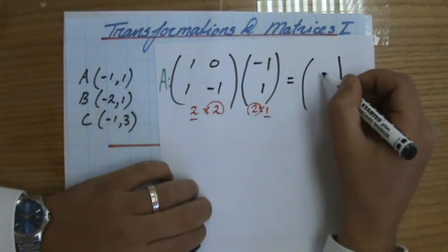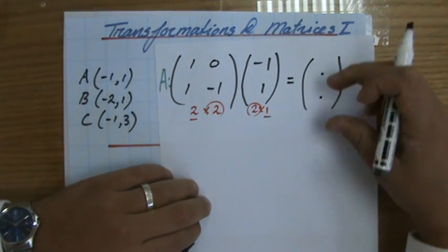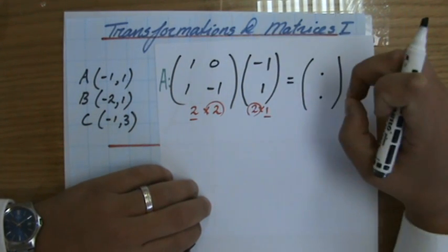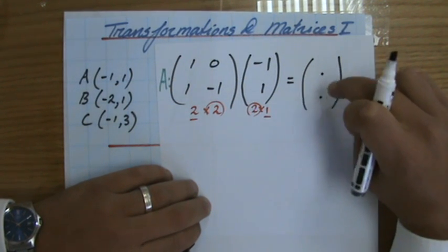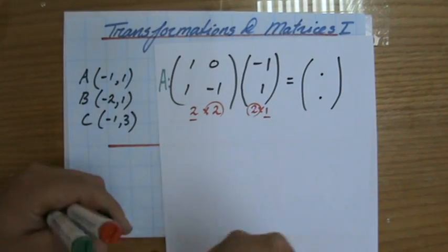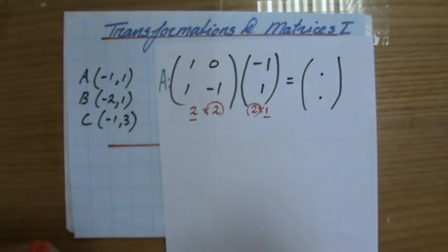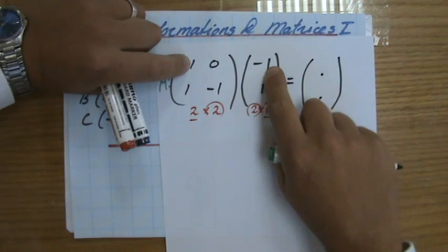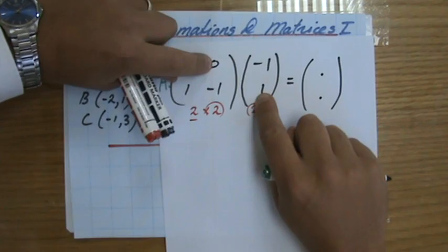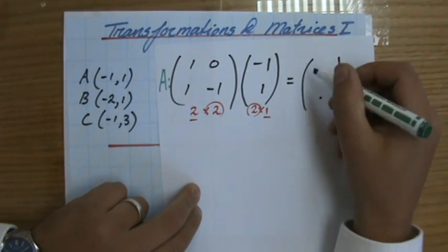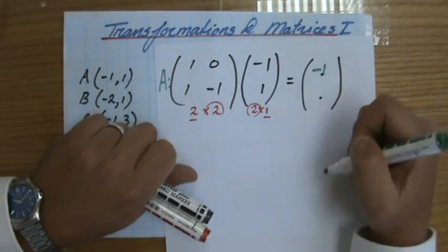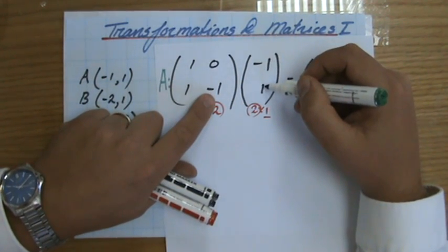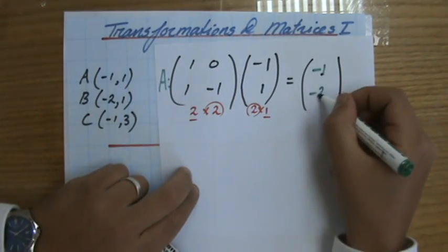I'll have a piece of information here and one there, and that will be my new coordinate written as a column vector. This number will be my x coordinate, and that number will be my y coordinate. So let's have a go. Please be comfortable multiplying matrices. 1 times minus 1 is minus 1, plus 0 times 1 is 0, so the answer is minus 1. And for the other one, 1 times minus 1 is minus 1, plus minus 1 times 1 is also minus 1, so that is minus 2.